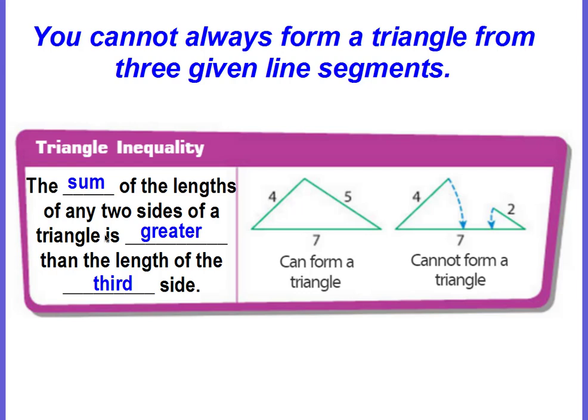To determine if three side lengths will form a triangle, the sum of any two sides has to be greater than the third side. Now, you have to go through all three sides. For example, if I add up 4 plus 5, is that greater than 7? Yes it is, 4 plus 5 is 9. So that would work.